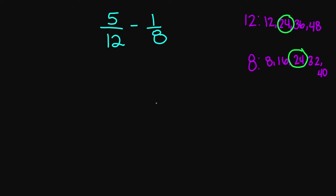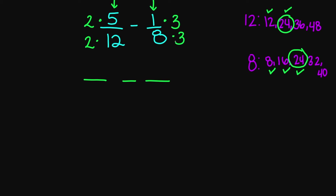So I need to get 24 in my denominator. For 5 over 12, I need to multiply my 12 by 2 to get 24, so I'll multiply top and bottom by 2. For 1 over 8, I need to multiply my 8 by 3 to get 24, so I'll multiply top and bottom by 3. Now multiplying: 2 times 5 is 10, over 2 times 12 is 24. Minus 1 times 3 is 3, over 8 times 3 is 24.